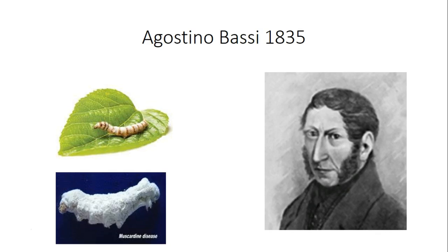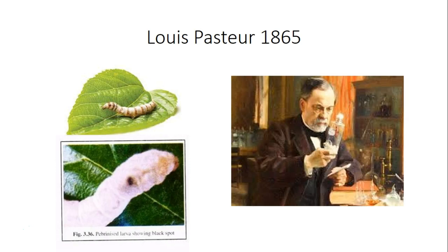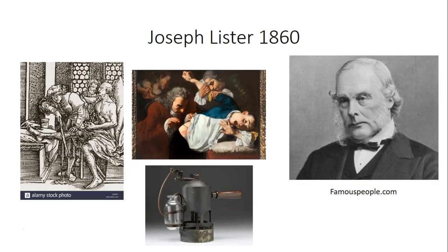In 1865, Pasteur was called in again because silkworms were getting sick and dying, which was hurting the silk industry. Pasteur looked at Bassi's research and determined that this form of silkworm disease was caused by a protozoan known as Nosema bombycis, and this disease is known as pébrine. He then developed a technique to distinguish between a healthy silkworm moth and the afflicted moths that would produce larvae with the disease.